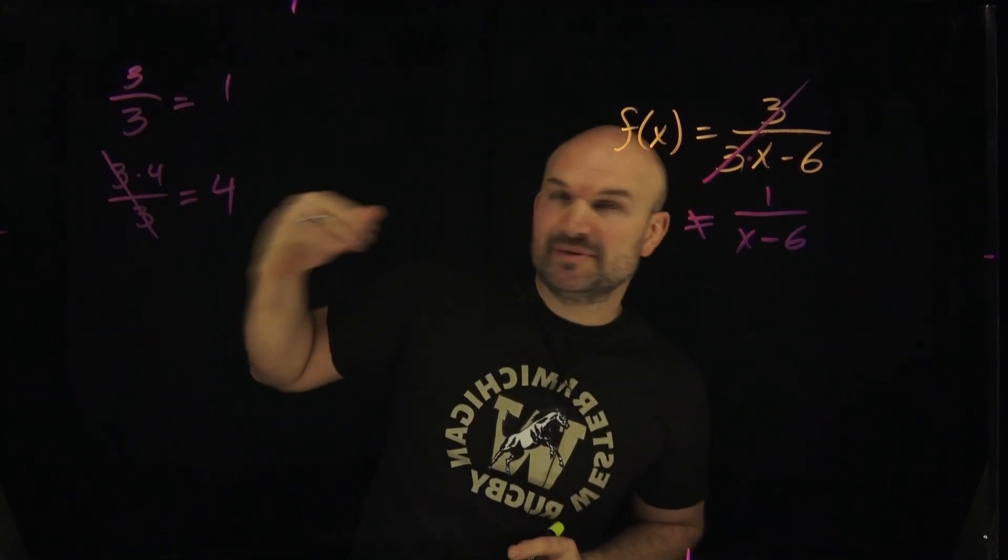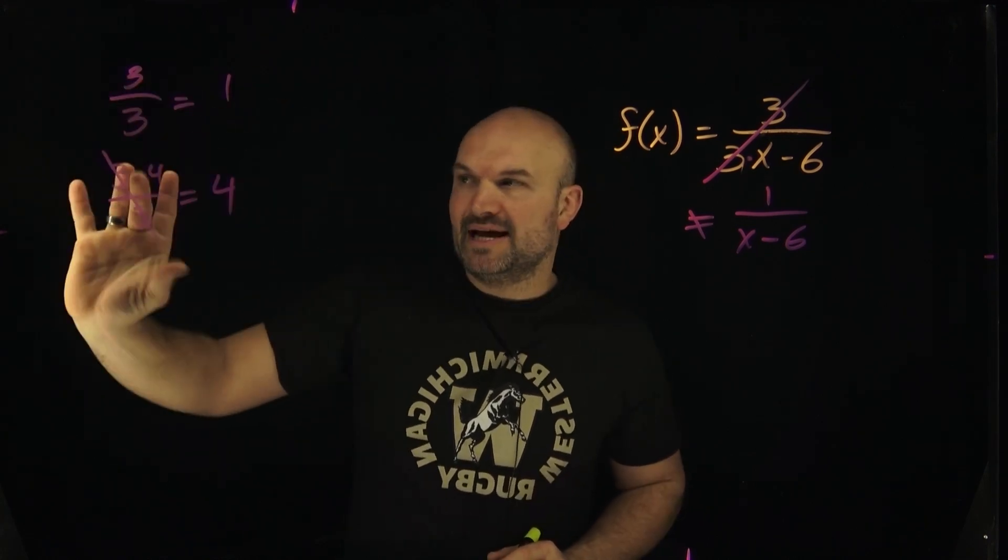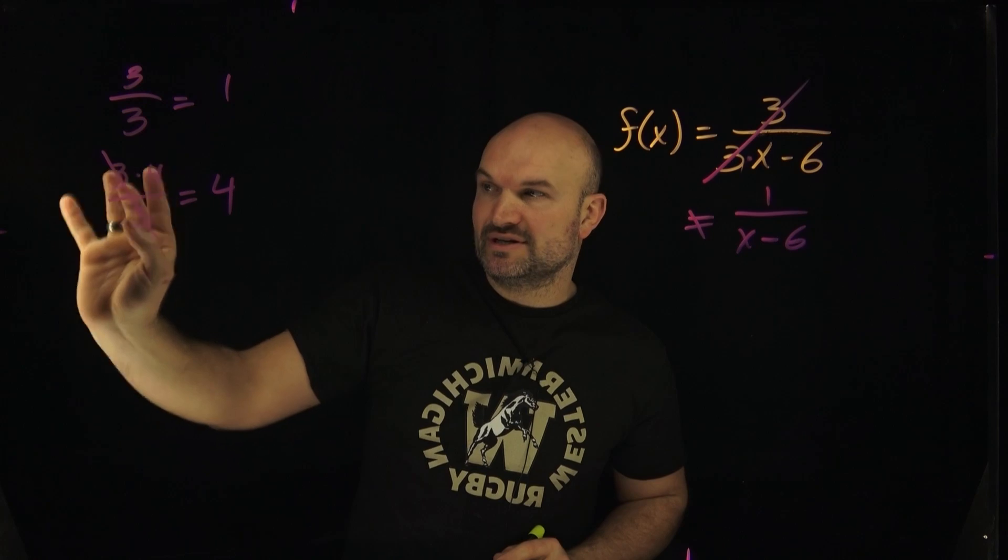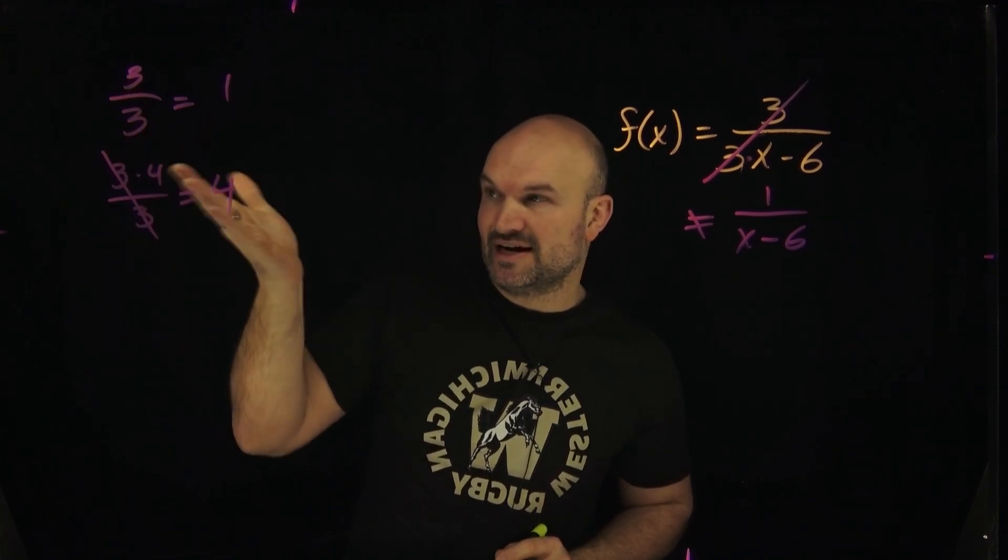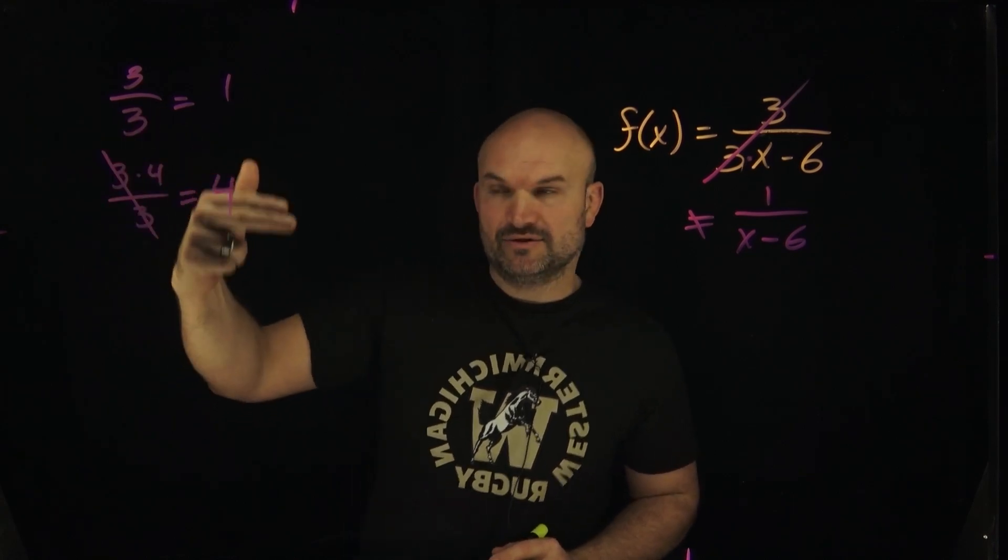Okay, so the division property states whenever you have something over itself, an expression, a number, then it's going to equal 1. But again, this only works here. If 3 times 4 divided by 3, you can see how the 3s will divide out that's equal to 4. And again, you can do the math in your head. 3 times 4 is 12, 12 divided by 3 is equal to 4.